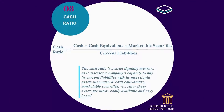Cash ratio is equal to cash plus cash equivalents and marketable securities, divided by current liabilities. It is a strict liquidity measure as it assesses a company's capacity to pay its current liabilities with its most liquid assets such as cash and cash equivalents, marketable securities, etc., since these assets are most readily available and easy to sell.